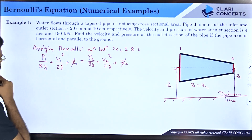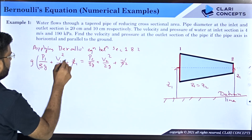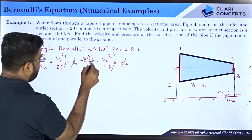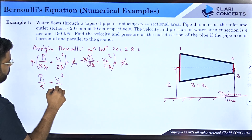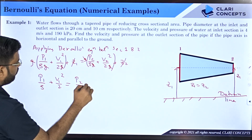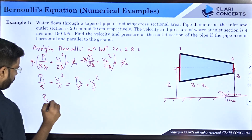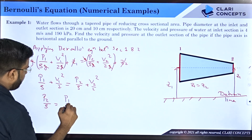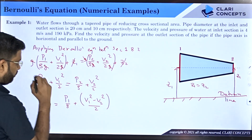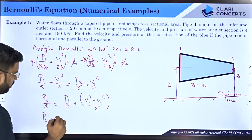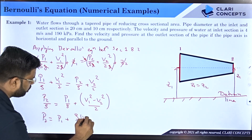Multiplying through by g, which cancels from all terms, the equation simplifies to: P1/ρ + V1²/2 = P2/ρ + V2²/2. Rearranging for P2: P2/ρ = P1/ρ + (V1² − V2²)/2, so P2 = P1 + ρ/2 × (V1² − V2²).